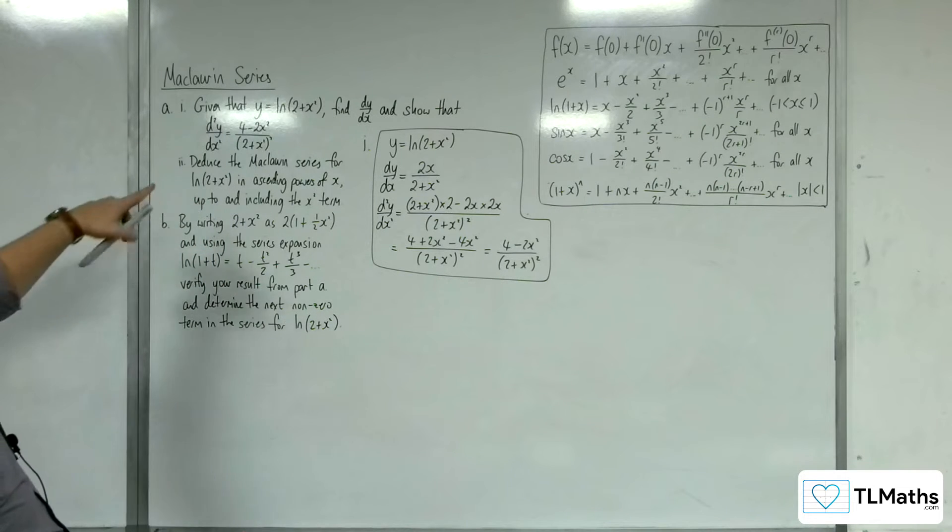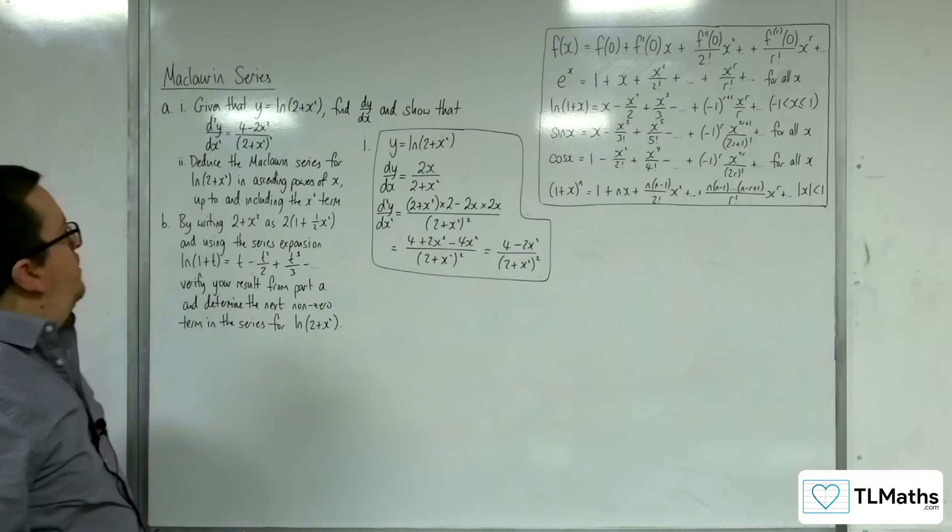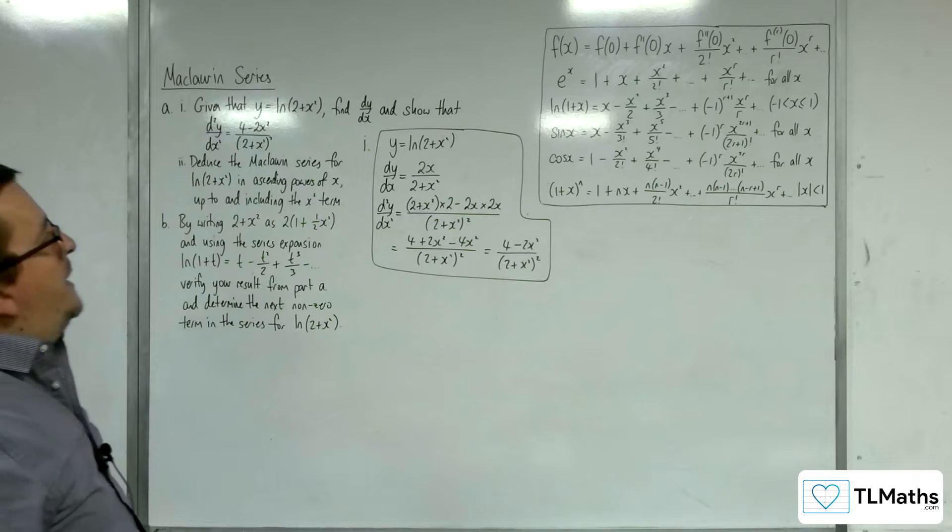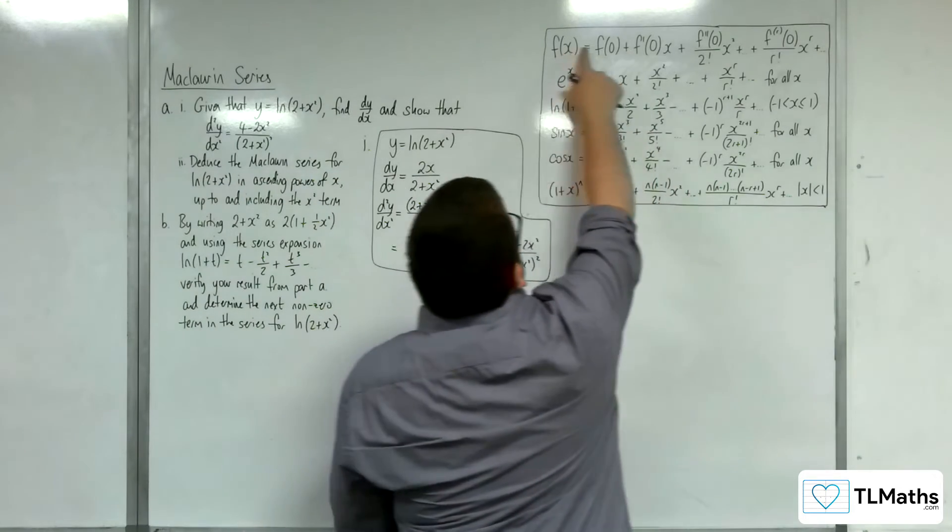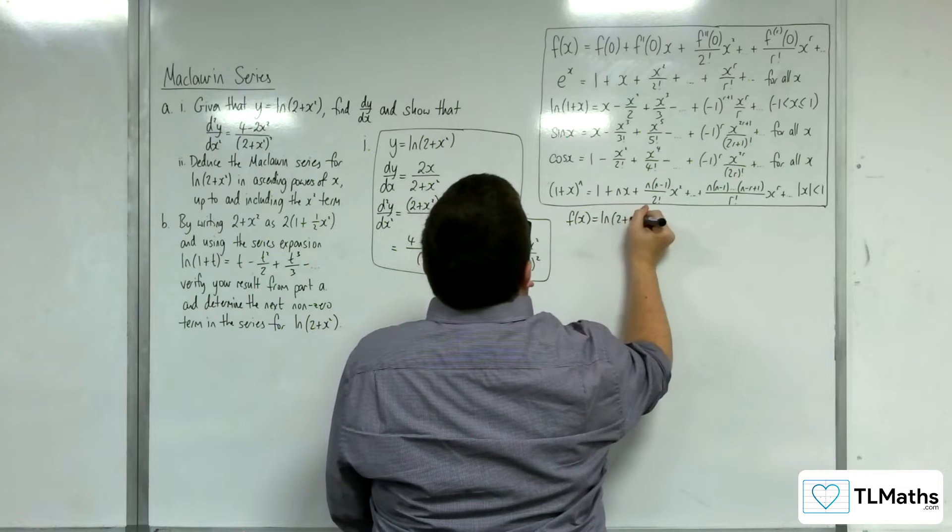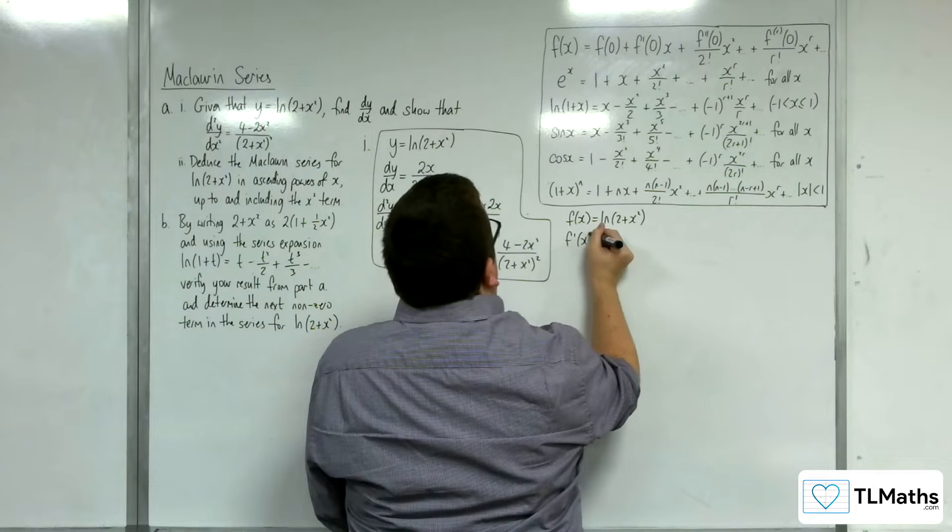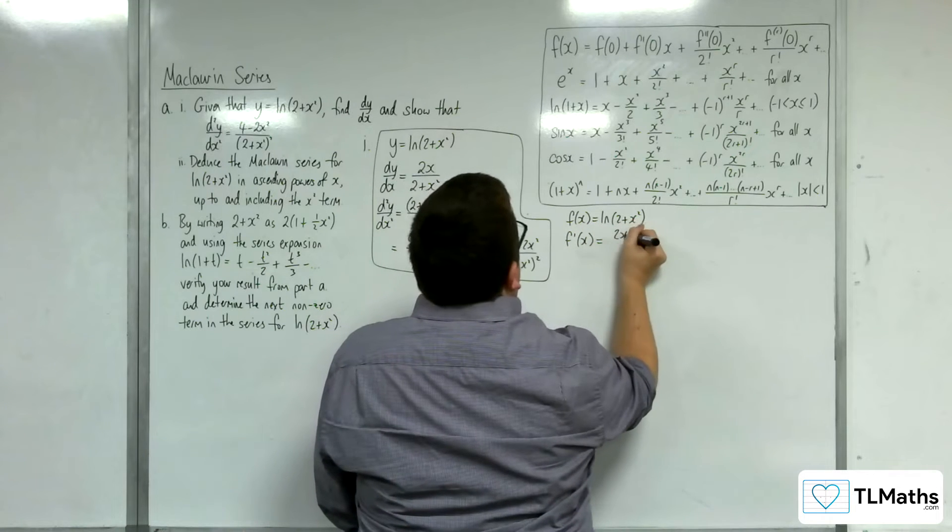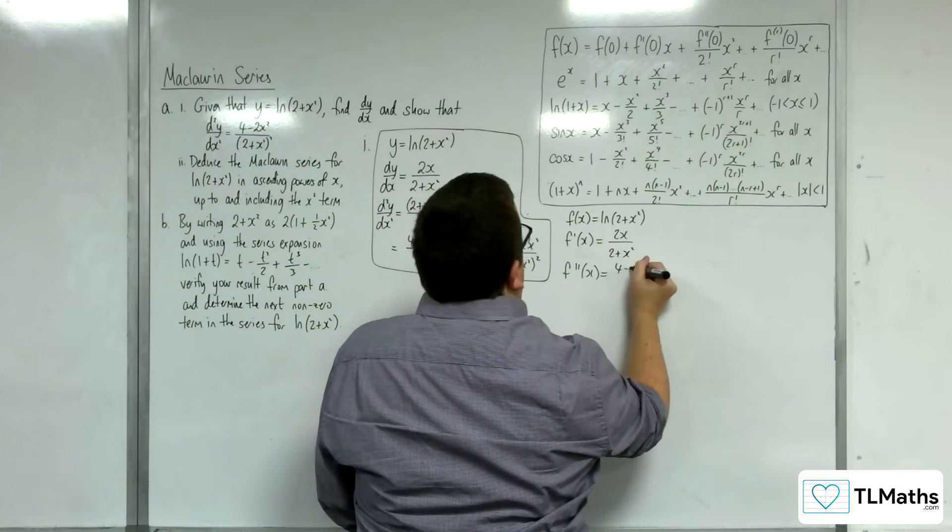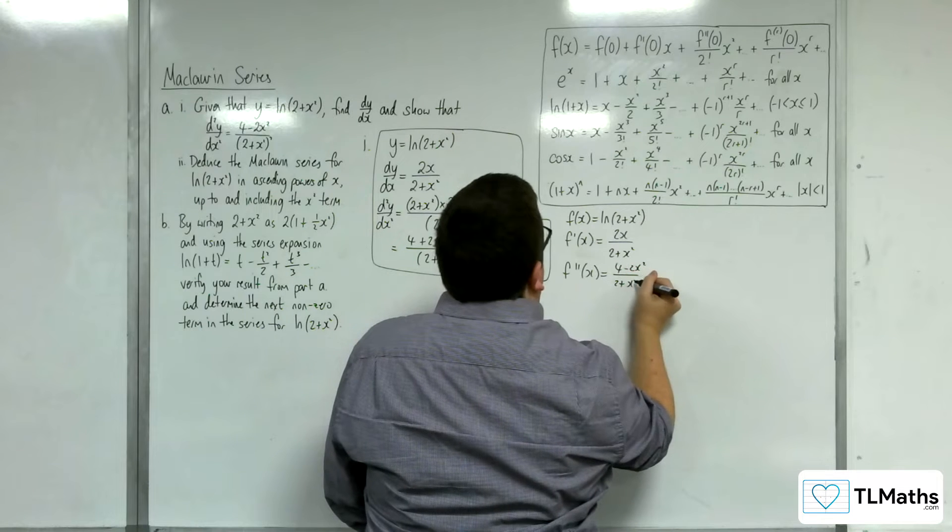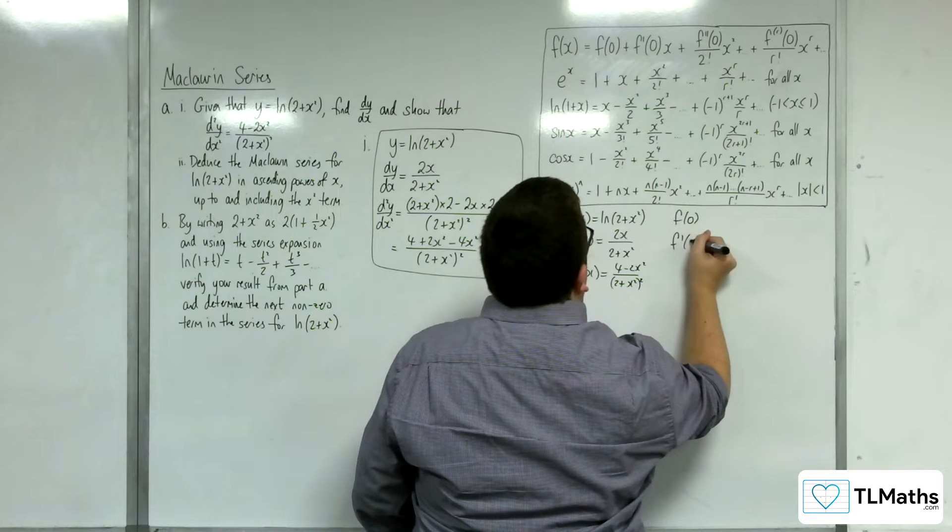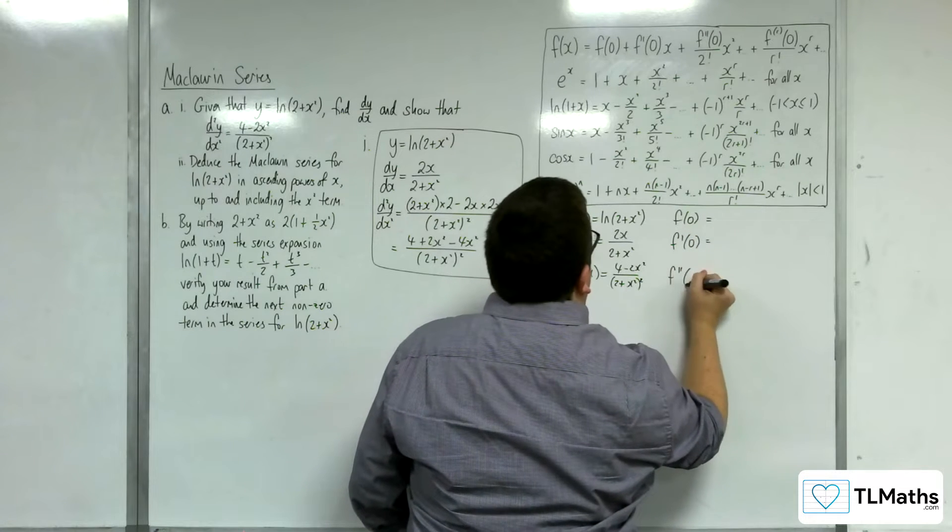Now part 2, deduce the Maclaurin series for log of 2 plus x squared in ascending powers of x, up to and including the x squared term. Okay, so we can use this top row here. So f of x is the log of 2 plus x squared, f prime of x is our 2x over 2 plus x squared, and f double prime of x is the 4 take away 2x squared over 2 plus x squared squared. So we need to find f of 0, f prime of 0, and f double prime of 0.